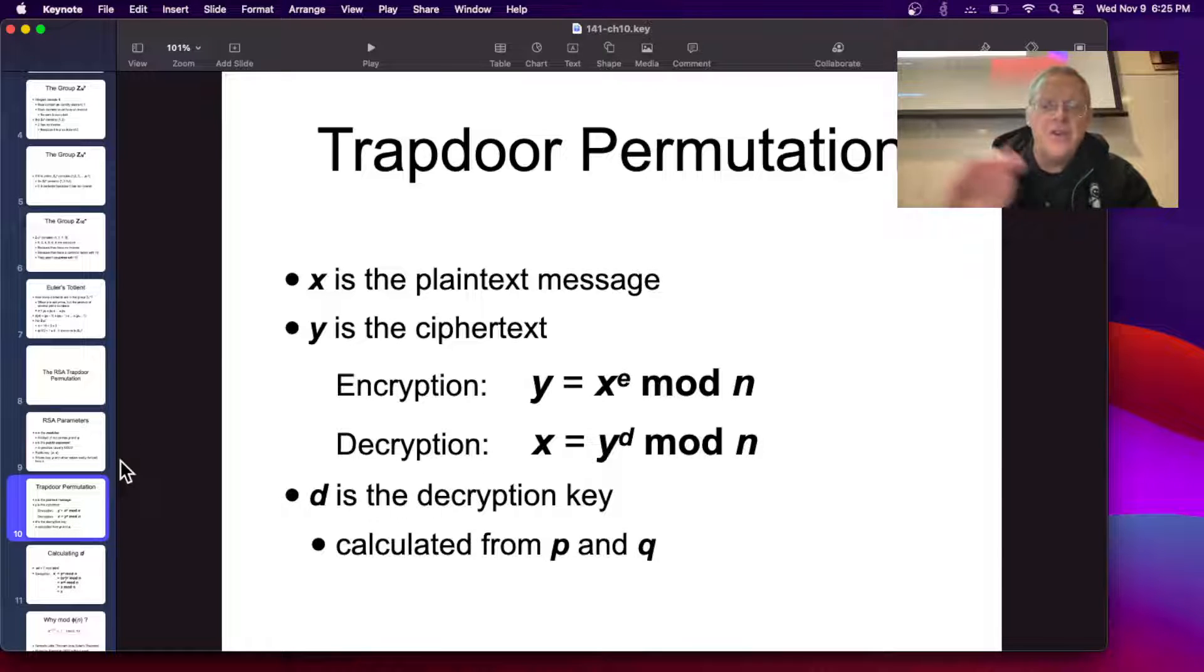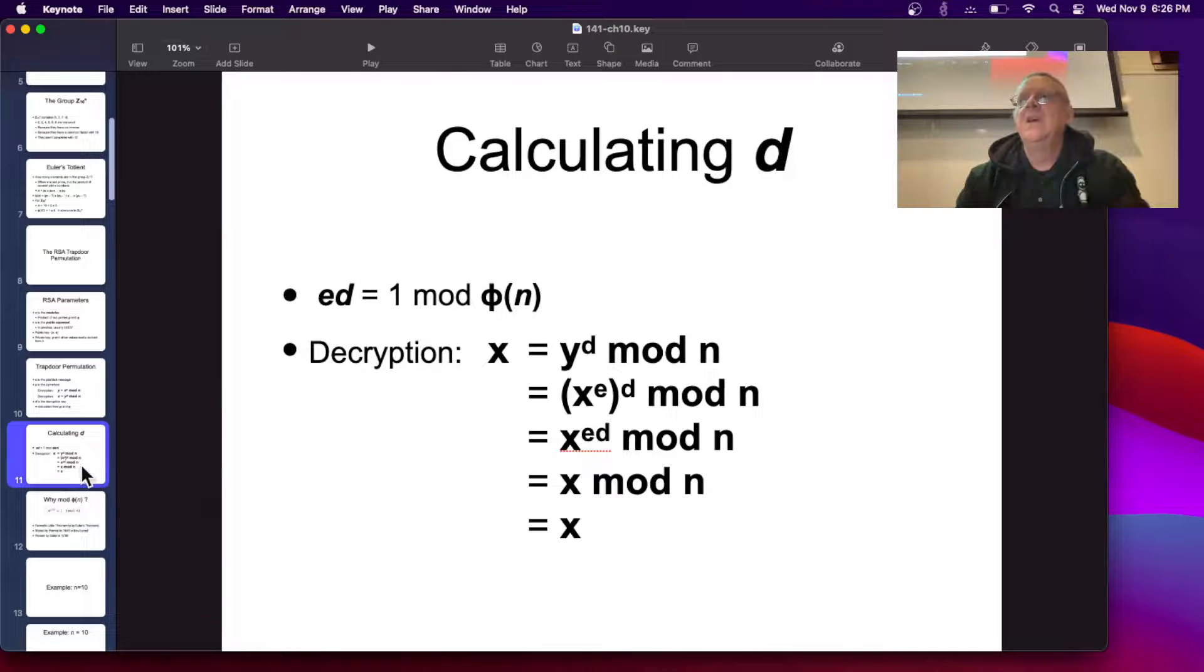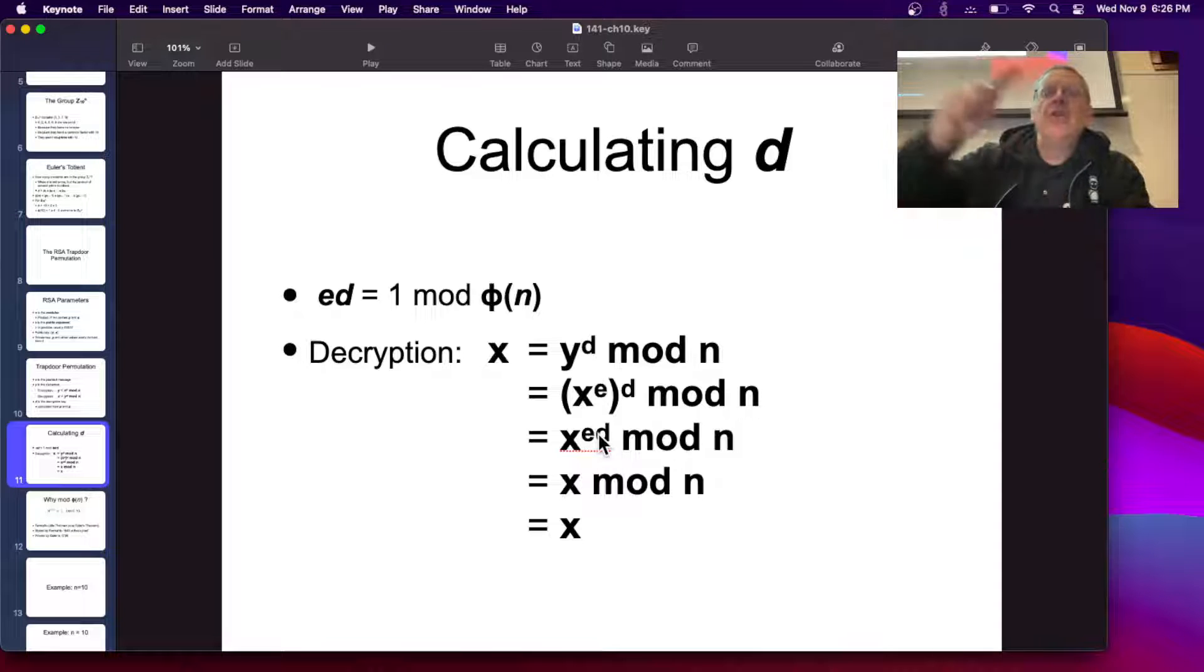That's why they call it a trapdoor. You can send a message in, but nobody can pull that message out without the decryption key. And so to calculate D, E times D has to be 1 mod phi. Because phi is the actual number of elements in the group, it's less than N. It's P minus 1 times Q minus 1. So to decrypt, you take Y to the D mod N, and Y is X to the E, so that's X to the ED mod N, and ED is going to get you back where you started. That's the point of it, because there are only phi elements in the group.